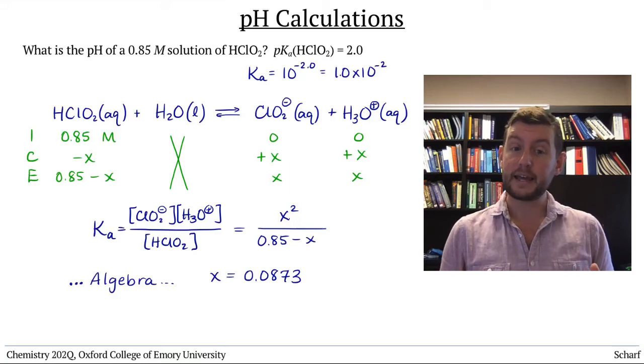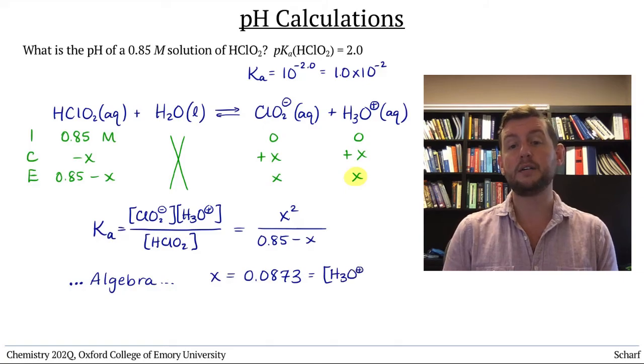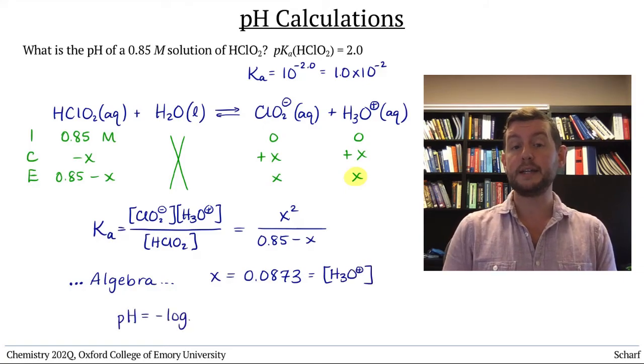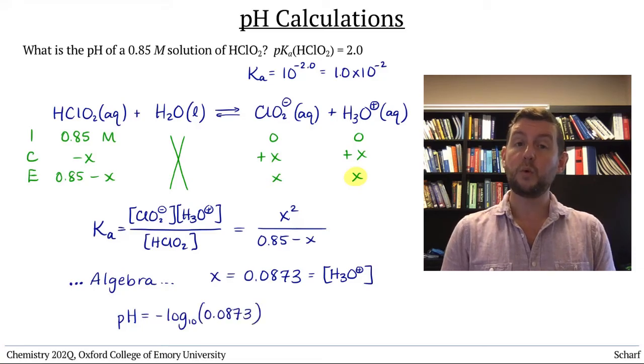Since x is the concentration of H3O+ at equilibrium, we can use that value to calculate the pH. The negative log of 0.0873 is 1.059, or 1.1. A pretty acidic solution.